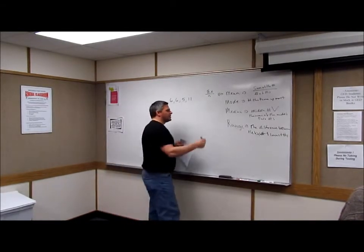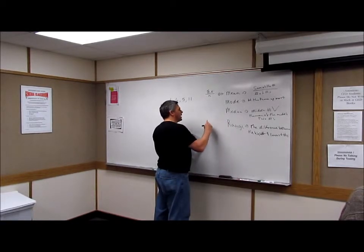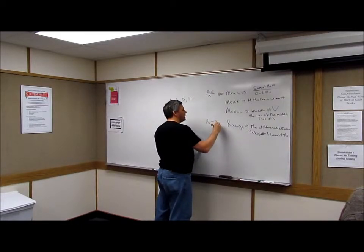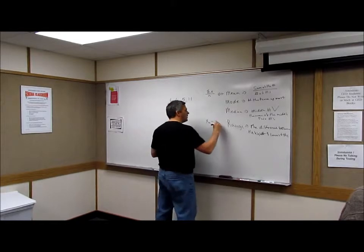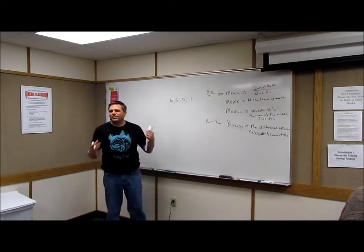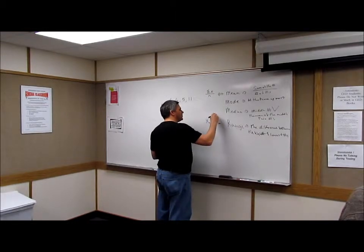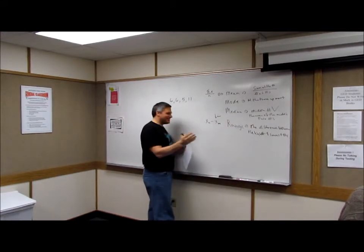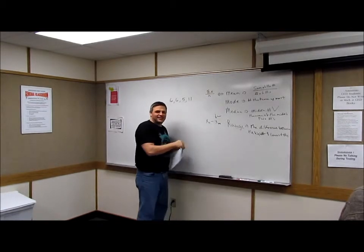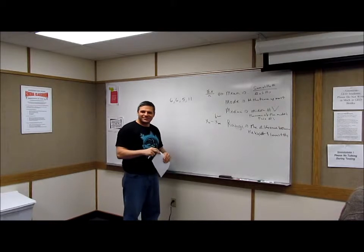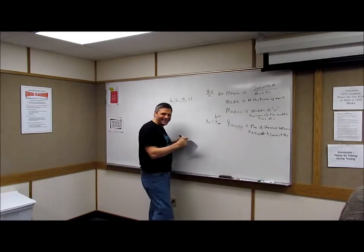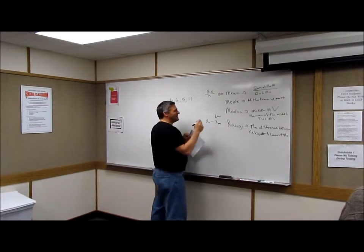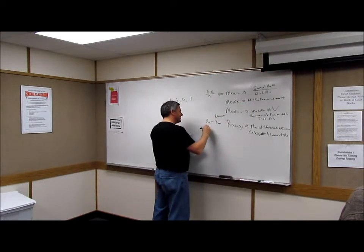So, in other words, you take X sub N minus X sub M. M being the lowest number. And then N as in no. So the lowest and the highest.